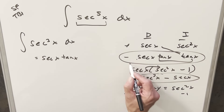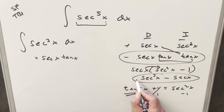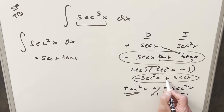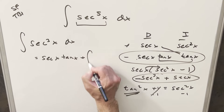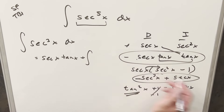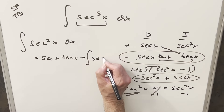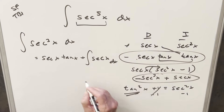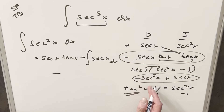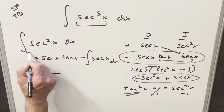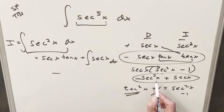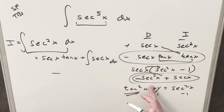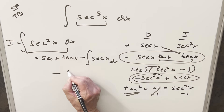Now we need to distribute in the minus sign, so this becomes a plus. We end up with plus the integral of secant x, and then minus the integral of secant cubed x — but that's the same as our original goal. We can label the integral of secant cubed x as I, so this piece becomes minus I.